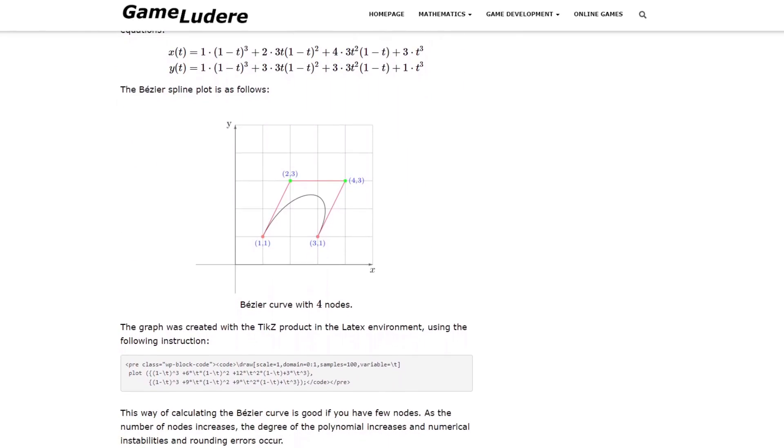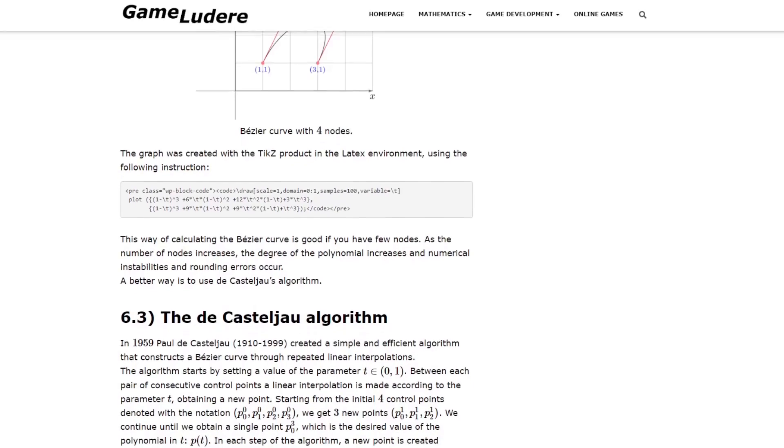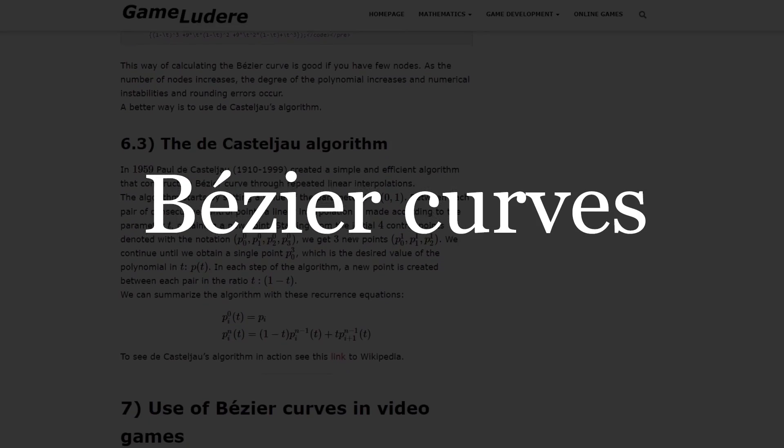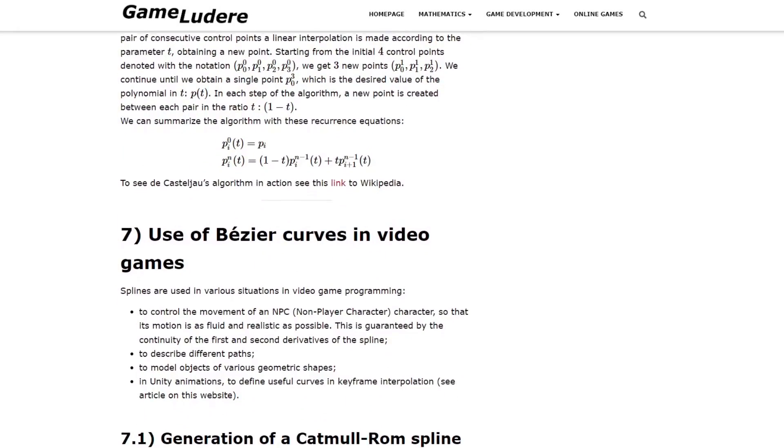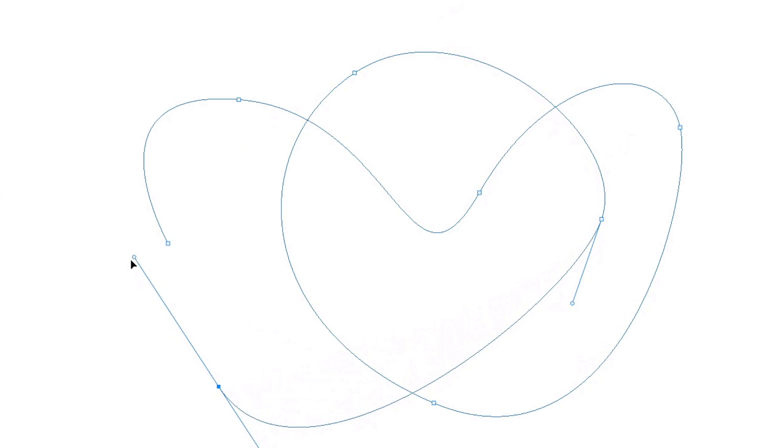What I found out was that the algorithm most of these games use is called Bezier curves. For those of you who like digital art, you might have come across this algorithm in the form of the pen tool, for example in Photoshop. The pen tool uses this algorithm to allow the user to draw nice curvy lines, but how does it work?